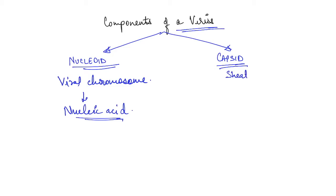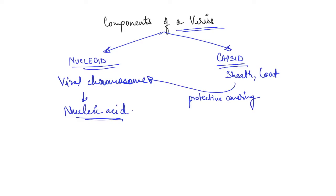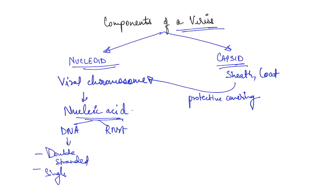The nucleoid can be a single molecule or a double molecule of nucleic acid. It is the part of the virus which causes the disease. The capsid is a sheath or coat which covers the nucleoid — it is the protective covering. The nucleoid can be DNA or RNA, and it can even be double-stranded or single-stranded in both cases.